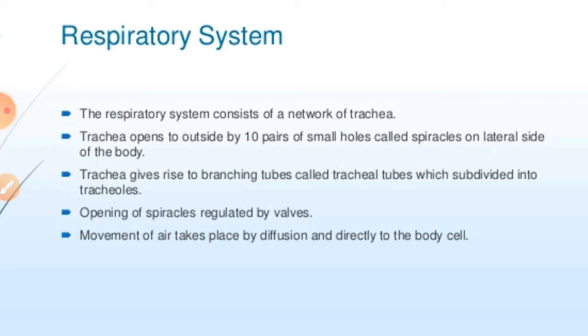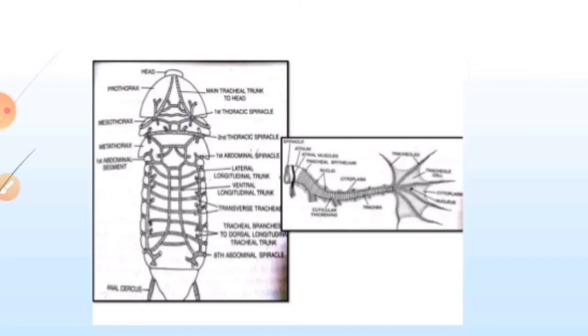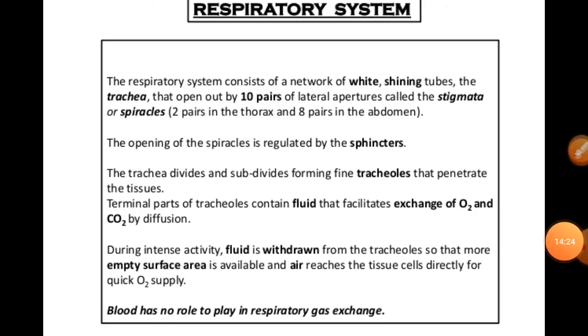Gas exchange occurs between the living cells and the body fluid. Expansion of the abdomen draws fresh air into the tracheal system through the stigmata, and contractions expel foul air outside. The terminal parts of the trachea contain fluid that facilitates exchange of O2 and CO2 by diffusion. During intense activity, fluid is withdrawn from the trachea so that more empty surface area is available for air to reach tissue cells.